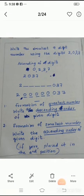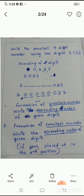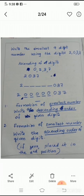Children, we have another question. Write the smallest nine-digit number using the digits 2, 0, 3, and 7. Here we have only four digits given and are asked to write the smallest nine-digit number. What should we do to write the smallest number?